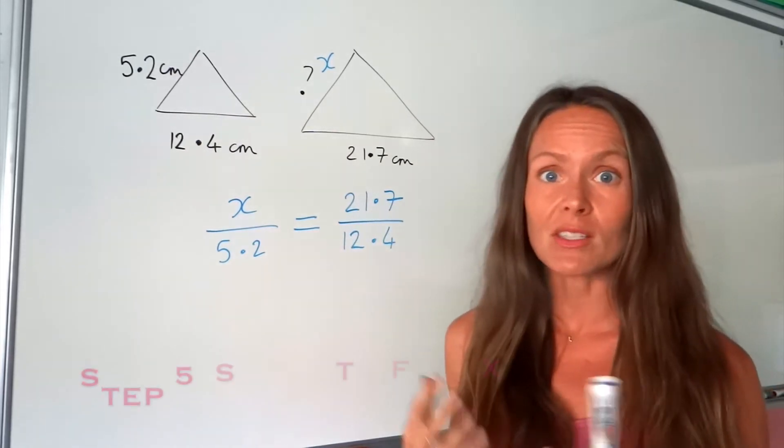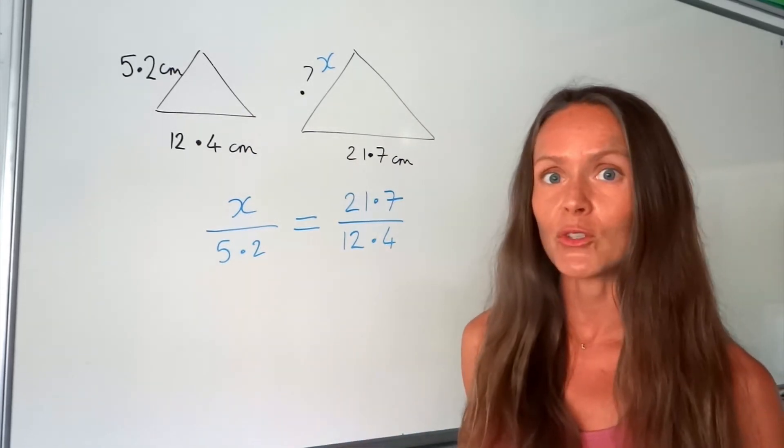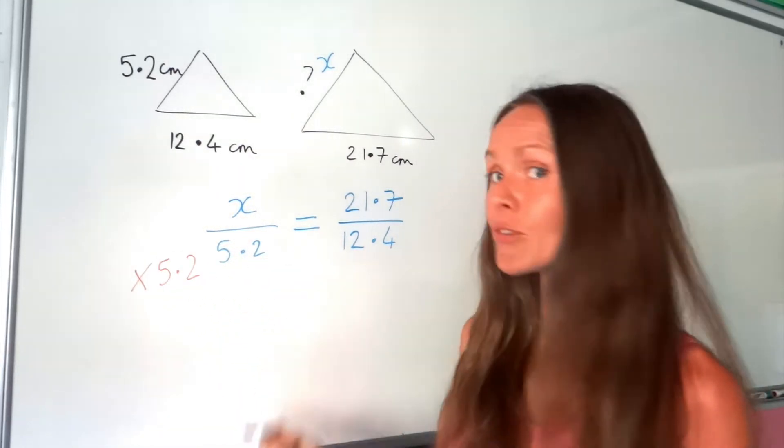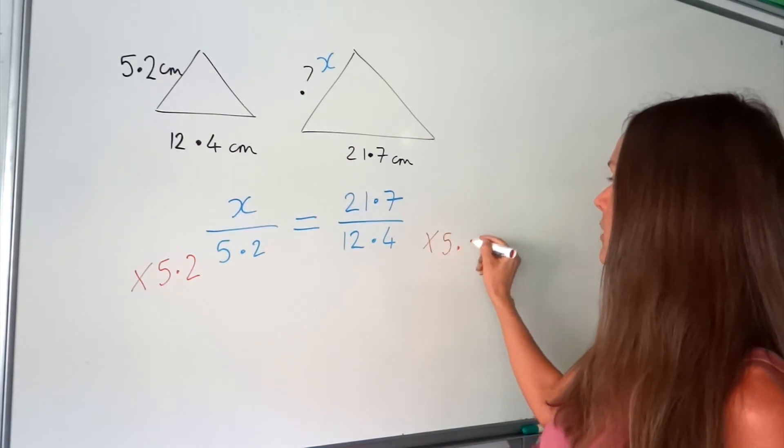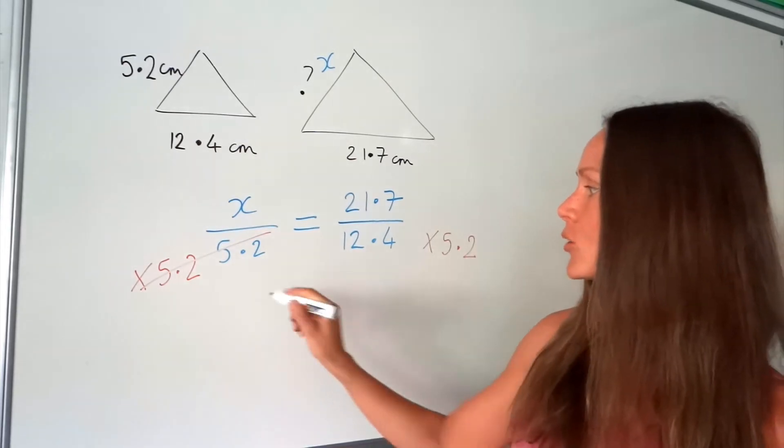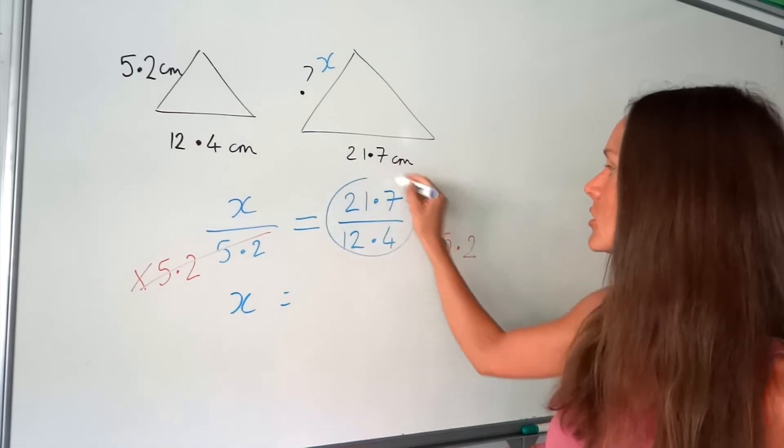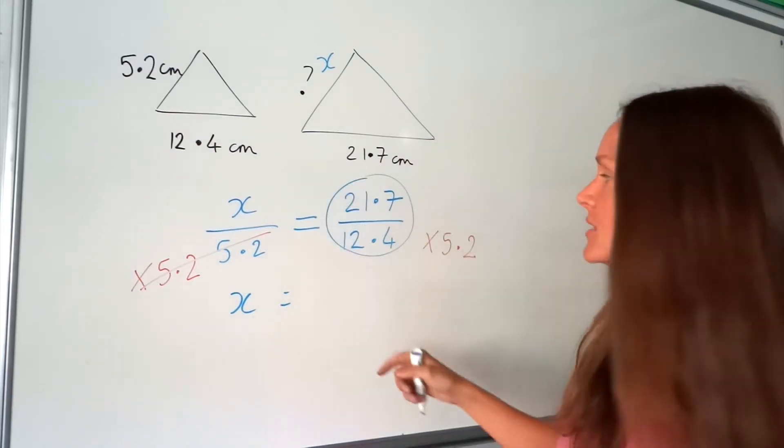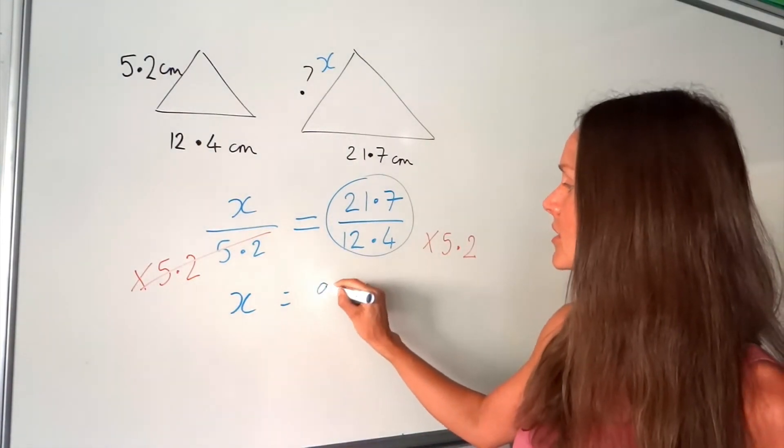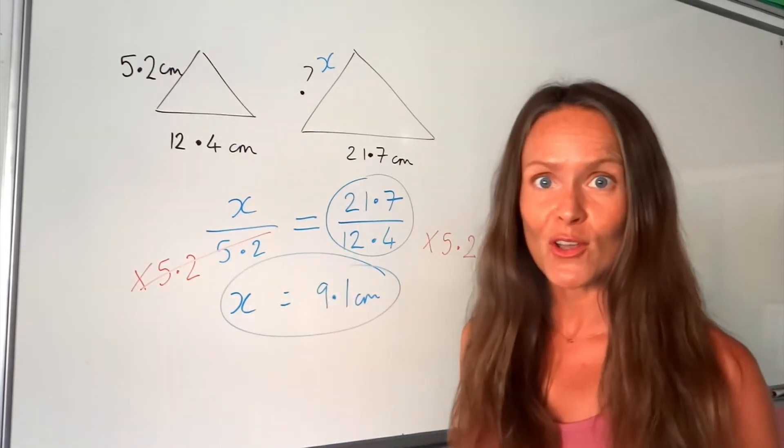So now all we have to do is solve the equation to find x. Because x is being divided by 5.2 we have to do the opposite and we need to multiply. Don't forget to do the same thing to both sides of your equation. On the left hand side they just cancel and we're left with x and on the right hand side you need to put that in your calculator. So type that fraction in your calculator or use divide and then you're going to multiply that answer by 5.2 and hopefully you will get 9.1 centimetres. So that is the answer to the first one.